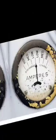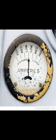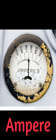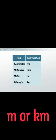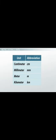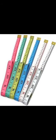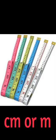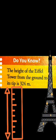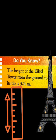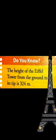Next, the unit of electric current is ampere. Distance is measured in metres or kilometres. And number eight, cloth is measured in centimetres or metres. Do you know, the height of the Eiffel Tower from the ground to its tip is 324 metres.